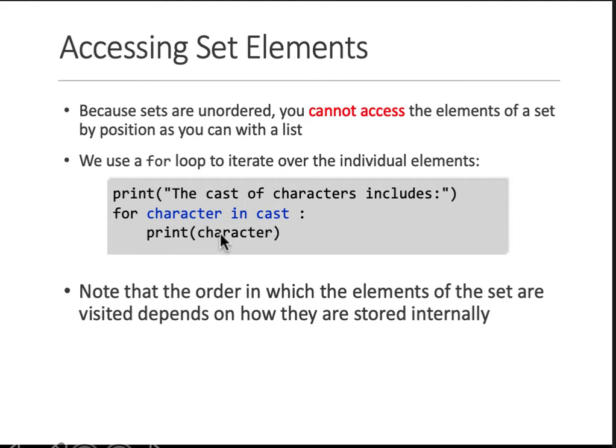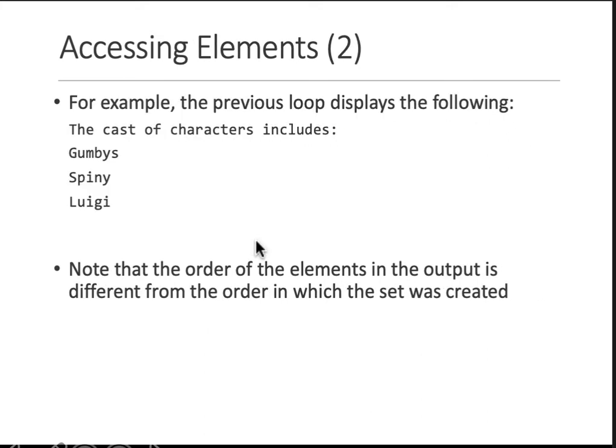And when you print character, so in this for loop, it will print all the characters in that set. And since they are unordered, you cannot access using an index. You have to write a loop to access all the elements. Then the display, it may be in this order. On your compiler, it may be the other order. Luigi may come first. Spiny may come second or third. Does not matter because the ordering in sets does not matter. It's how the compiler has stored them. It will retrieve them that way. And we cannot say that put Luigi at index 1. We just cannot say that with sets.